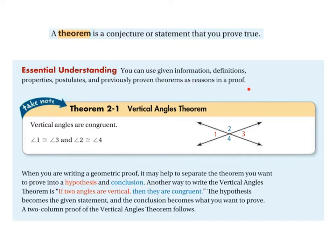Remember, this course started out with just point, line, and plane. We used those three ideas to begin building other ideas, and once we have those, we can go from there and use them. The Vertical Angles Theorem says that vertical angles are congruent.